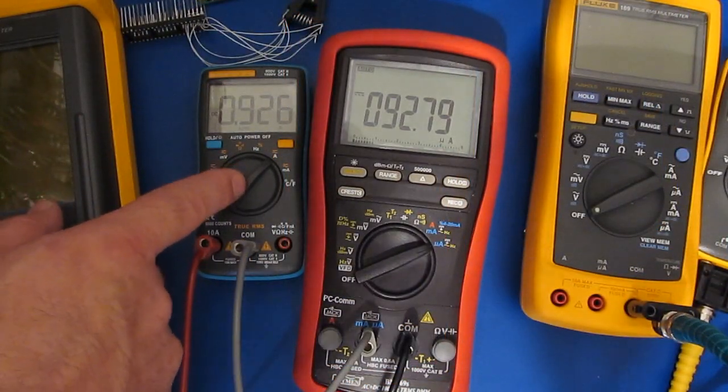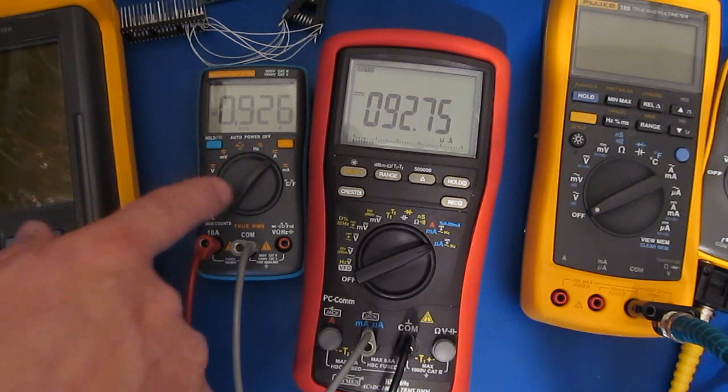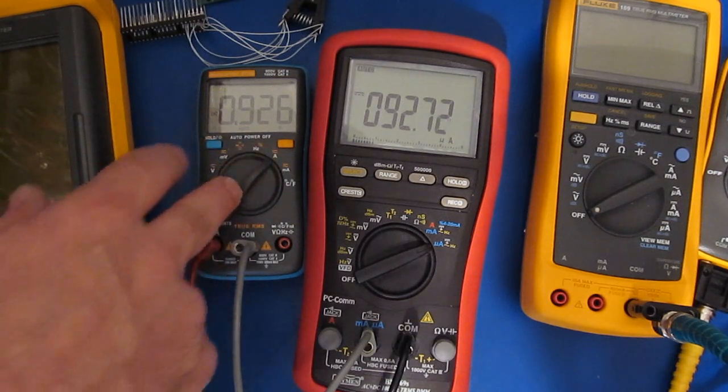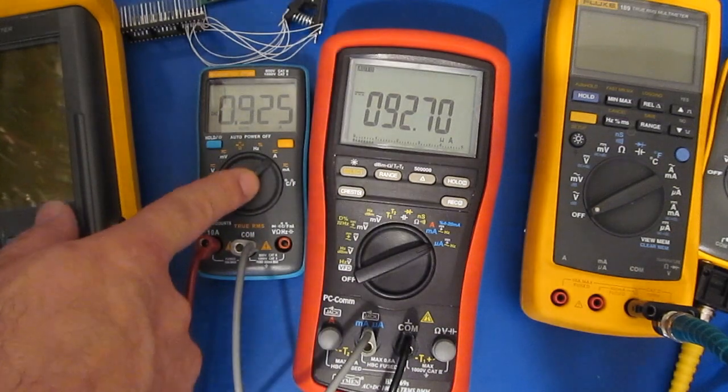So what I've done is I've reprogrammed the limit where the beeper turns on for the 10 amp range. It used to come on right at 10 amps, and because we're now using this for the micro amp range, I'd like to be able to run this thing up to the full 6,000 counts.